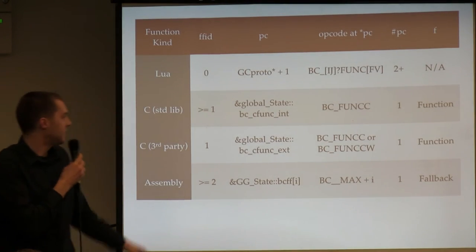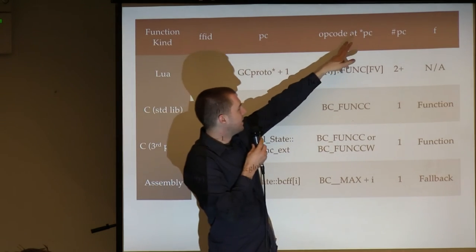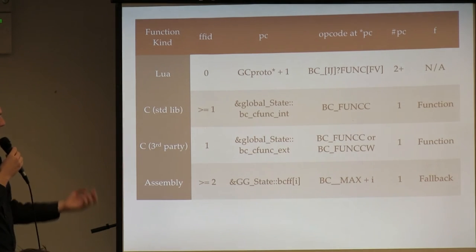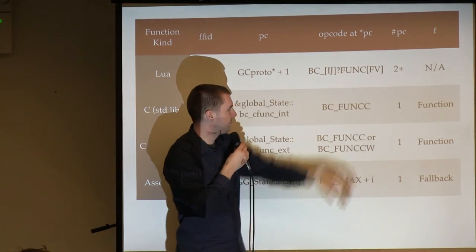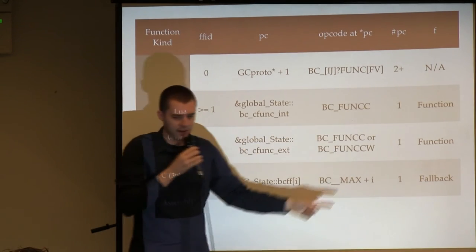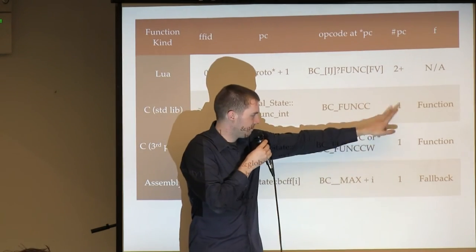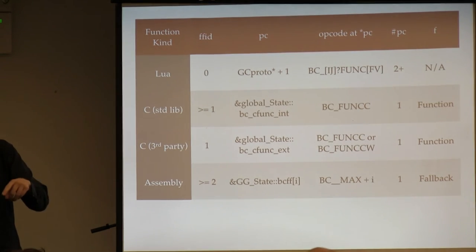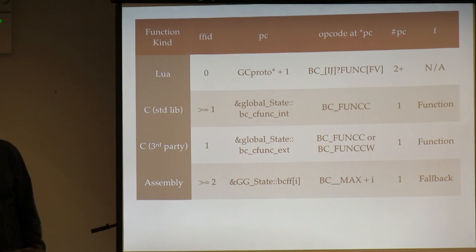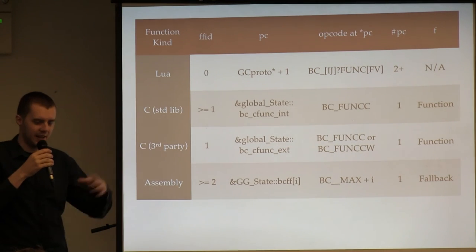What is kind of useful is what the PC points to — specifically, the first bytecode of a function. If you're a Lua function, your first bytecode will be one of six things: funcf, funcb, funci, funcj, etc. If you're a C function, your bytecode will be this one called bc_func. There will be exactly one bytecode in your array. bc_func is a bytecode that calls the C function. This makes function calls really cheap — it doesn't matter whether it's a C function or a Lua function; you just run the bytecode, because all functions have it.